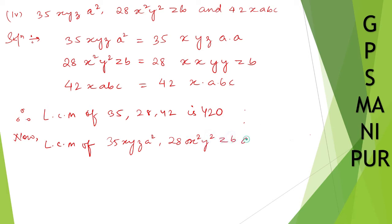and 42 x a b c is: First, 35, 28, and 42, LCM is 420. So write down 420.